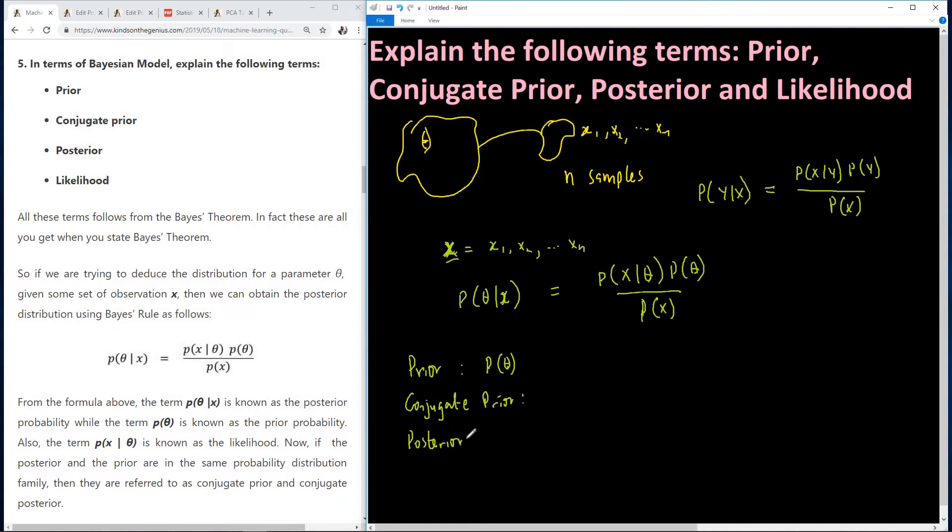Posterior is this term P of theta given x. Now, after you've taken the samples or the observation, so this is the posterior. Now the likelihood.